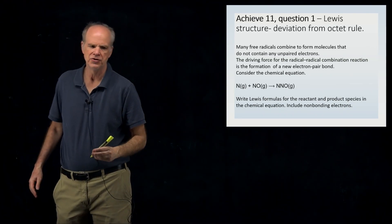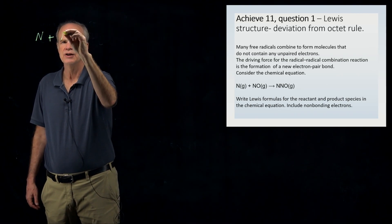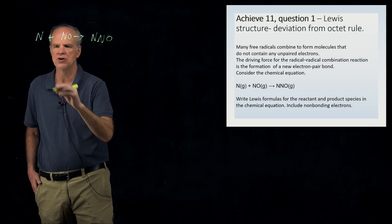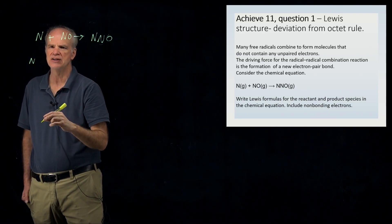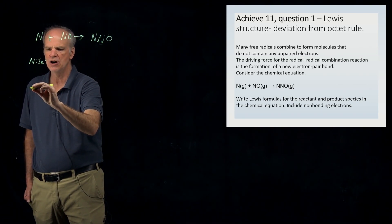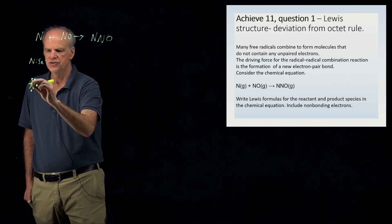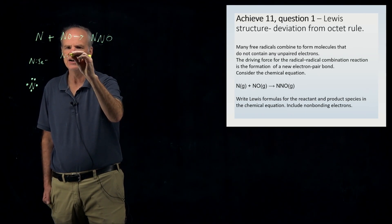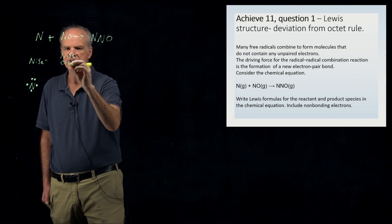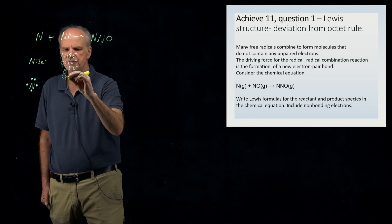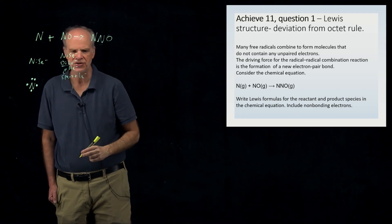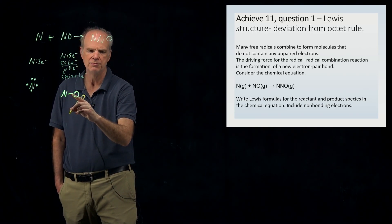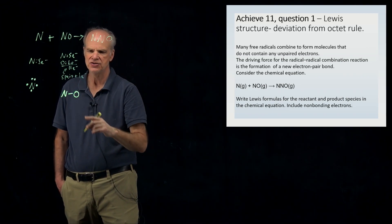Now for the more difficult second problem: nitrogen plus NO gives N₂O. For the nitrogen atom, nitrogen has five valence electrons with three unpaired electrons, so the nitrogen atom itself is a radical. For nitrogen oxide (NO), nitrogen contributes five electrons and oxygen contributes six, giving 11 electrons total — five pairs plus one extra electron.